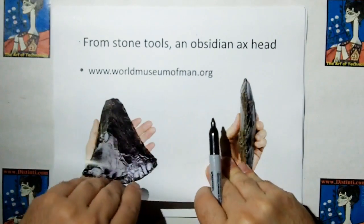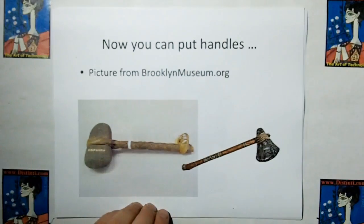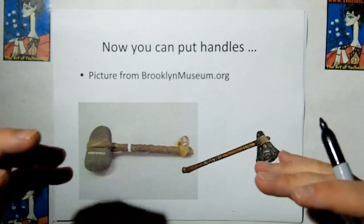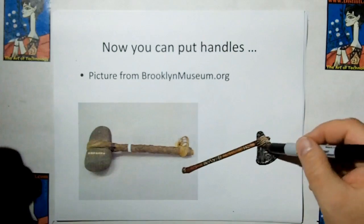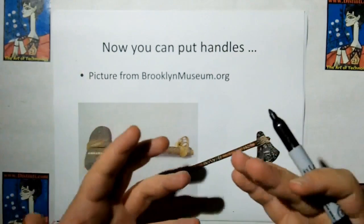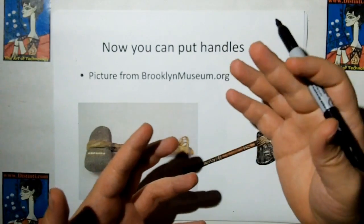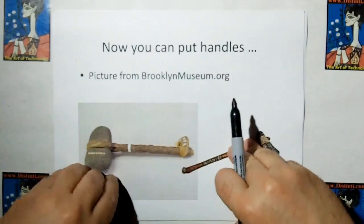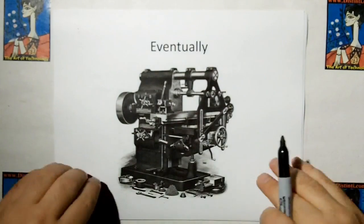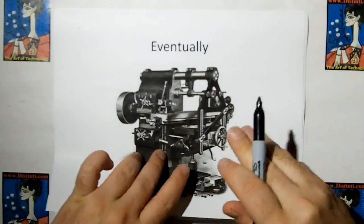This is from worldmuseumofman.org. And then once they've got the axe then they can cut sticks and they can improve both their axe and their stone hammer by putting a wood stick on it with all kinds of cords. And so what you can see here is one tool becomes an evolution to the next tool becomes an evolution to the next tool until eventually we can develop superior tools. But just because we develop superior tools doesn't mean that's the end.